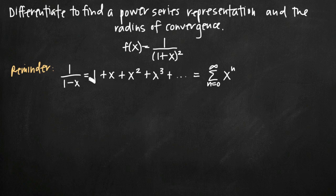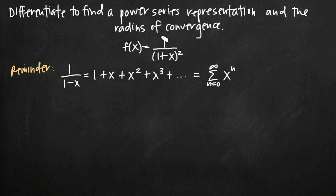By doing so, we might be able to differentiate this well-known power series to get something on the left-hand side very similar to our original function f of x. What we want to do is replace x with negative x everywhere, because if we replace x with negative x in the denominator, we get 1 minus negative x, which is 1 plus x — one step closer to our original function 1 plus x squared.